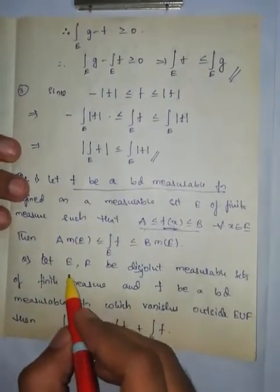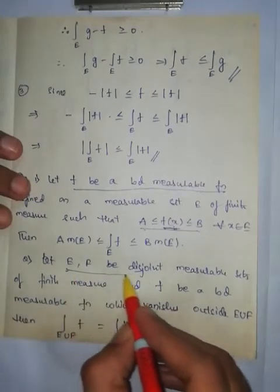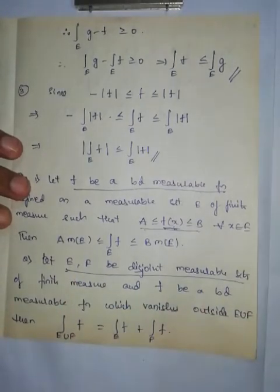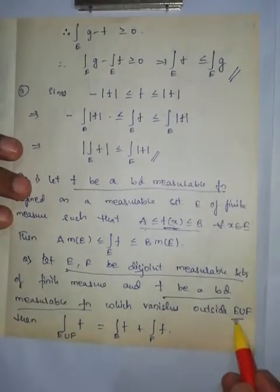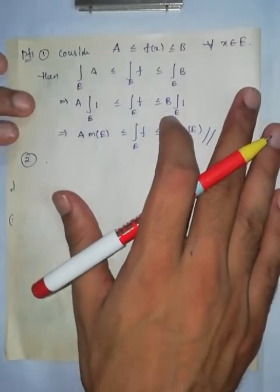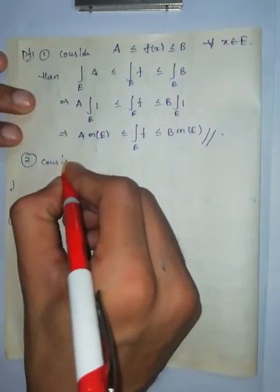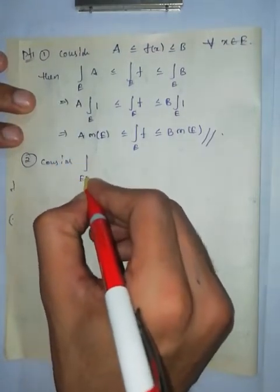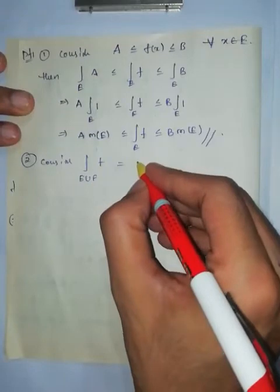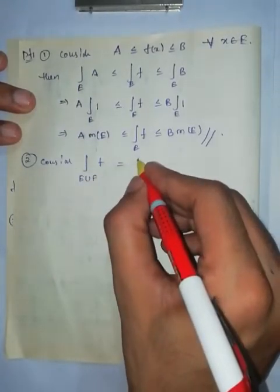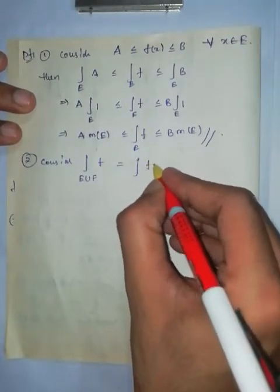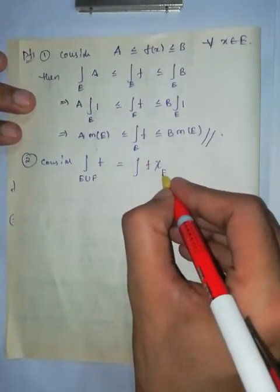What is given in the second theorem? E and F are disjoint measurable sets. f is a bounded measurable function which vanishes outside E union F. We need to prove the additivity of the integral. Consider the Lebesgue integral over E union F, and from the definition of the Lebesgue integral over a measurable set, this equals the Lebesgue integral of f times chi_{E union F}.